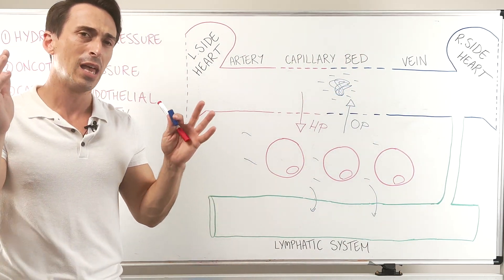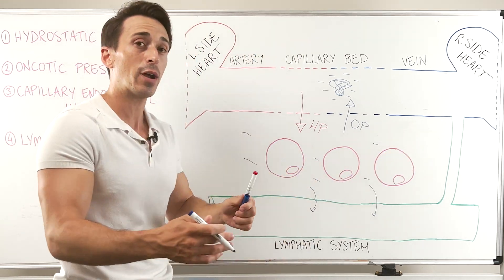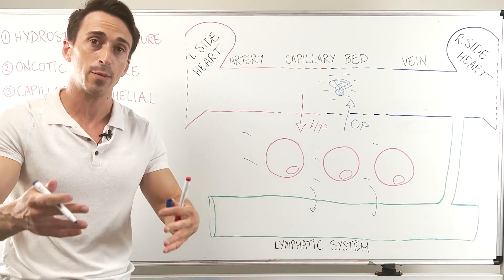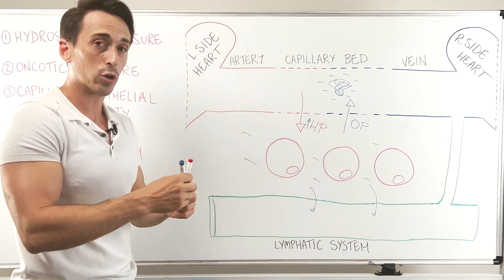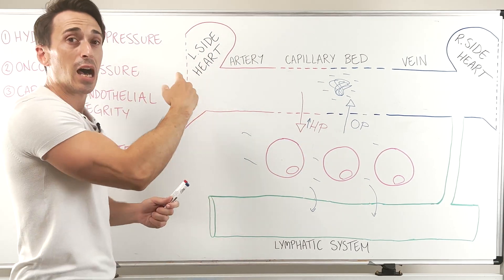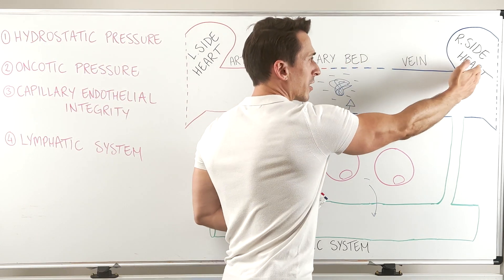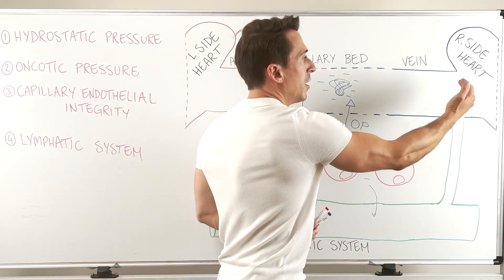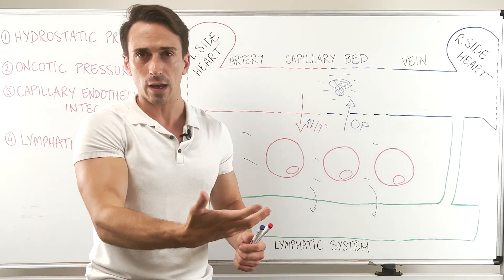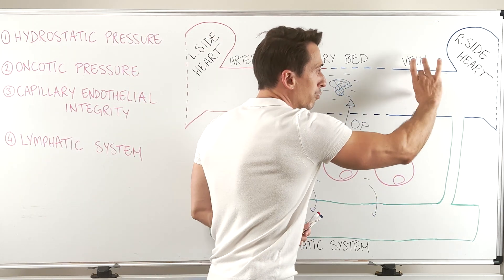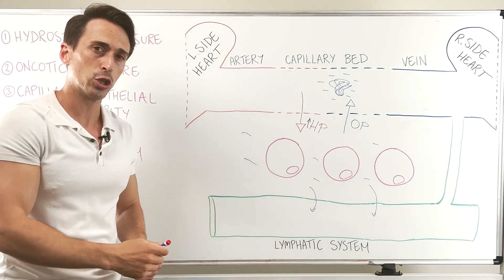What's happening in edema? Anything that increases the amount of fluid building up in the interstitial area can result in edema. One cause is an increase in hydrostatic pressure. What could cause this? The left-hand side of the heart working too hard and pushing fluid out, the right-hand side of the heart not working — heart failure backing things up — or the veins being blocked, such as deep vein thrombosis, or externally compressed.